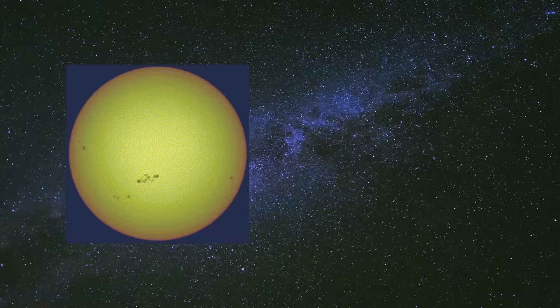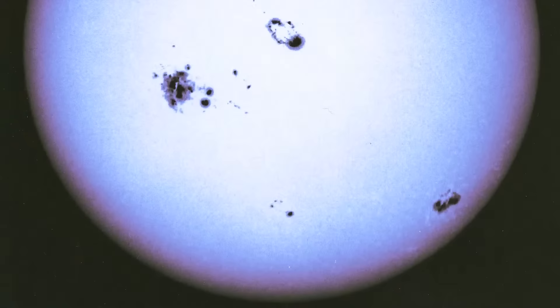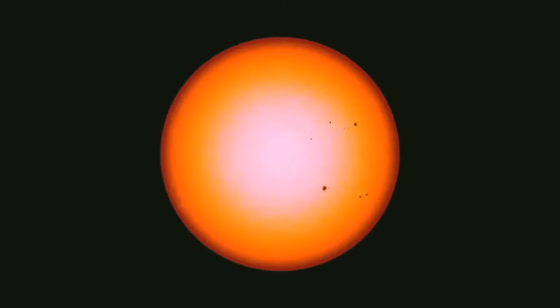In June, 163 sunspots appeared on the sun's surface. The last time we had so many dark patches was in September 2002, when there were 187 of them. It seems this chaotic party is getting closer to its peak, and that's something we call solar maximum.